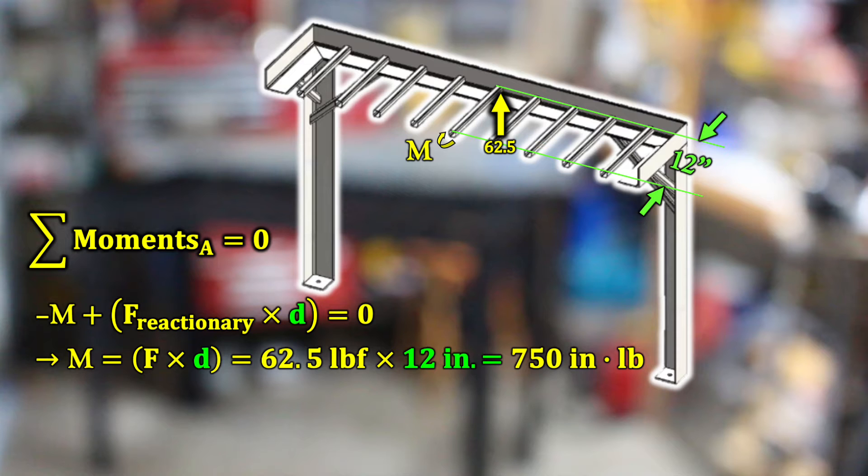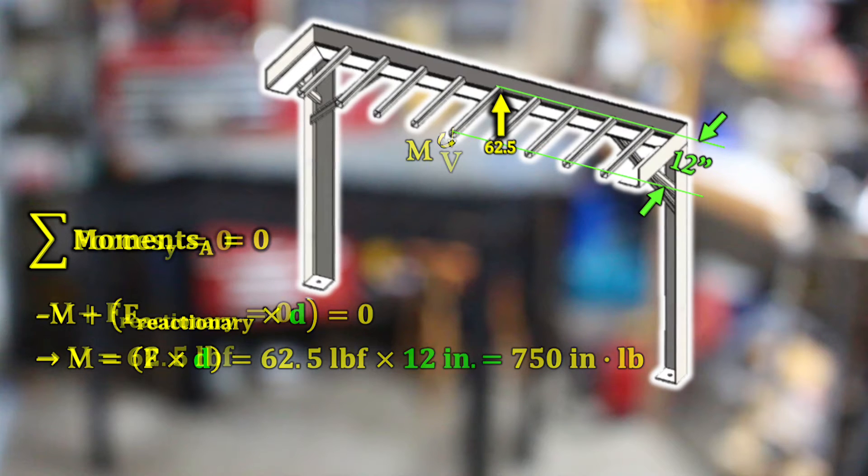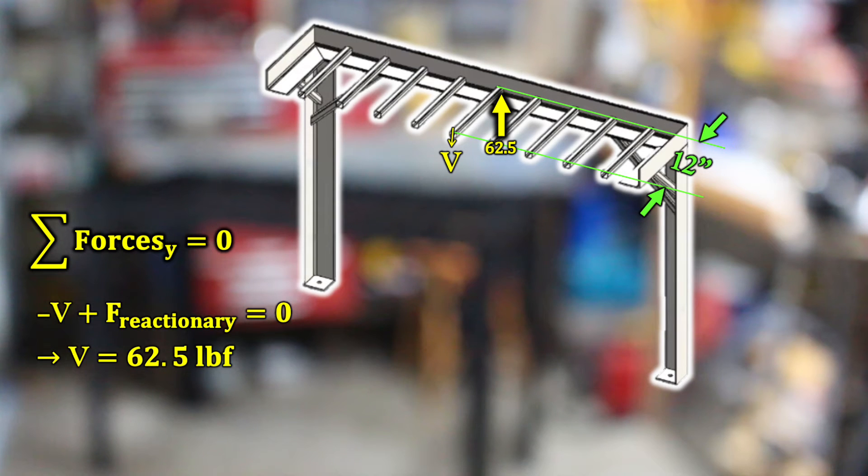Now for every action, there's an equal and opposite reaction. There also must be a reactionary force to counterbalance that 62 and a half pounds, which is itself 62 and a half pounds.